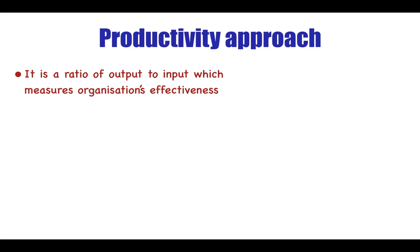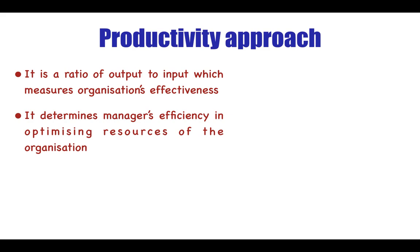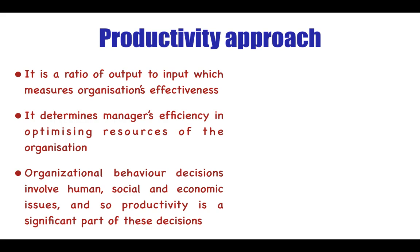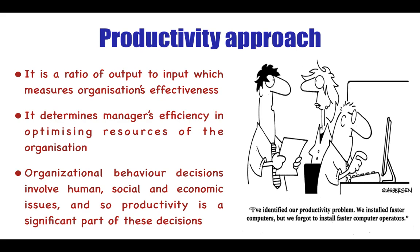The third approach is the productivity approach. It says there is a ratio of output to input which measures the organization's effectiveness — how much output you are getting from how much input you are putting in. It determines the manager's efficiency in optimizing the organization's resources. Organizational behavior decisions involve human, social, and economic issues, so productivity is a significant part of these decisions.